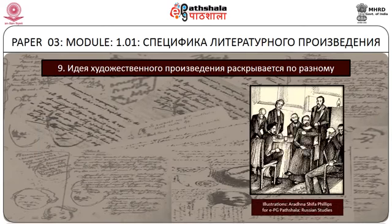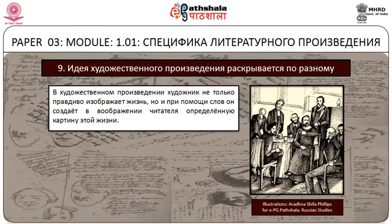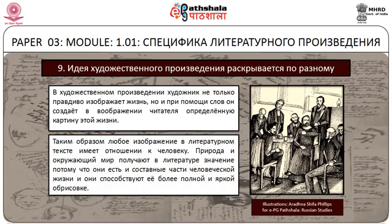В художественном произведении художник не только правдиво изображает жизнь, но и при помощи слов создает в воображении читателя определенную картину этой жизни. Любое изображение в литературном тексте имеет отношение к человеку. Природа и окружающий мир получают в литературе значение, потому что они являются составными частями человеческой жизни и способствуют её более полной и яркой обрисовке.